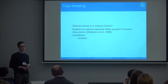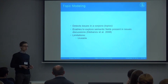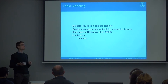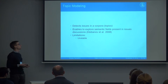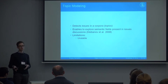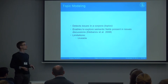Topic modeling is the best candidate for an unsupervised approach. It detects issues in a corpus — that's what it's designed for. It enables exploring semantic fields, as Klybanov and colleagues suggest, and semantic fields are a representation of a frame. Semantic fields are present in topic contents, the result of topic modeling. However, topic modeling has limitations: it's unstable — running the algorithm with the same parameters on the same data gives a different solution every time, making it hard to reproduce. But there is research suggesting ways to deal with that.